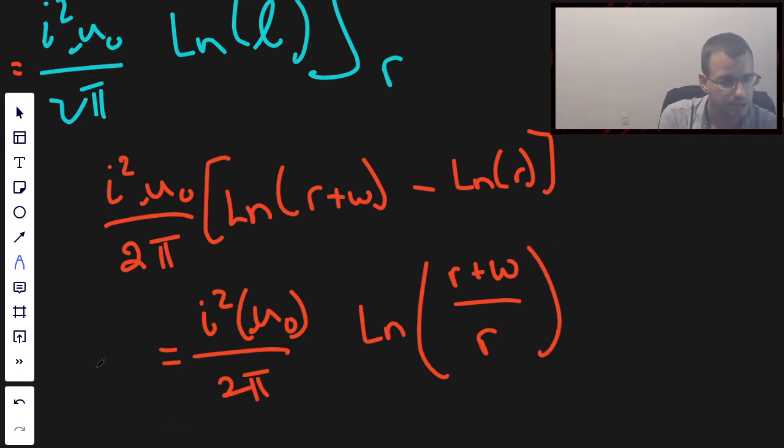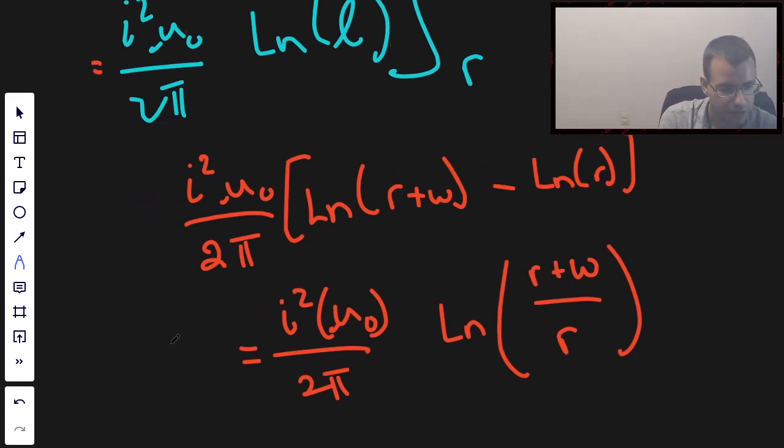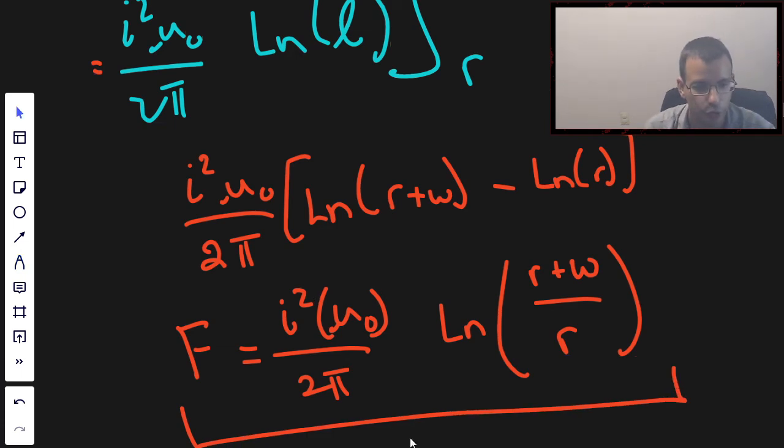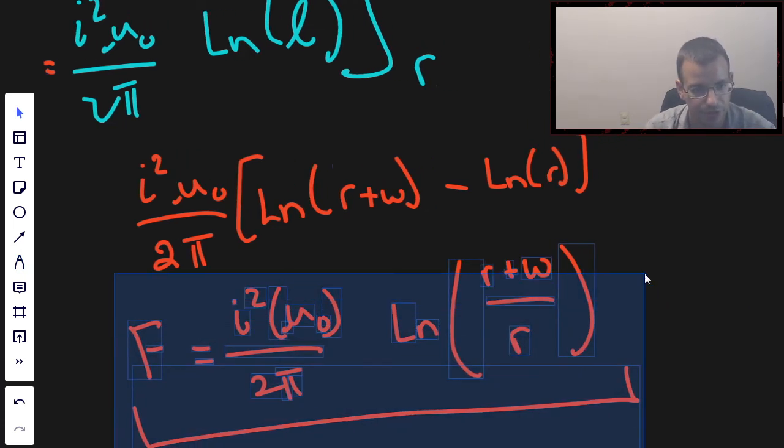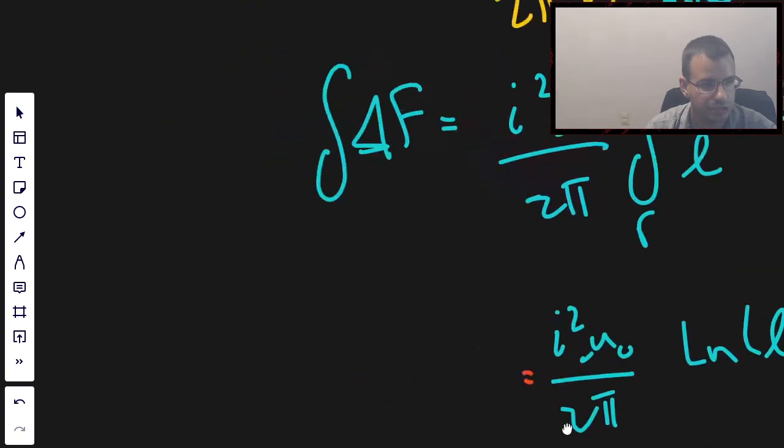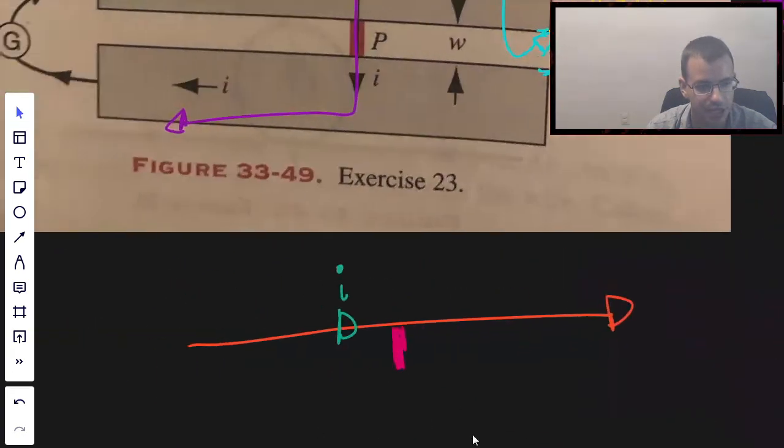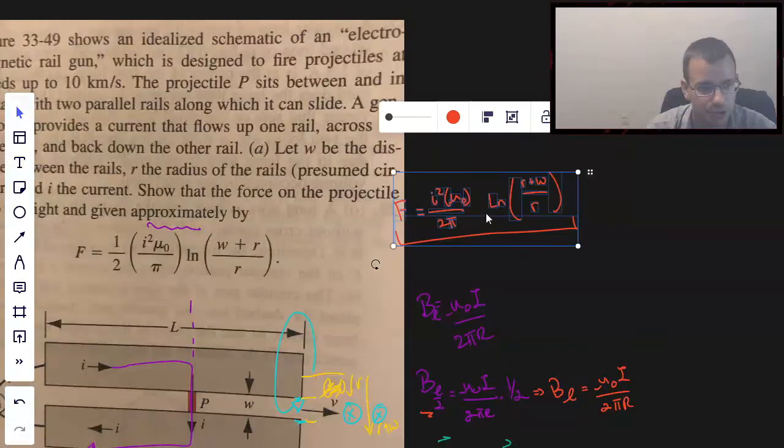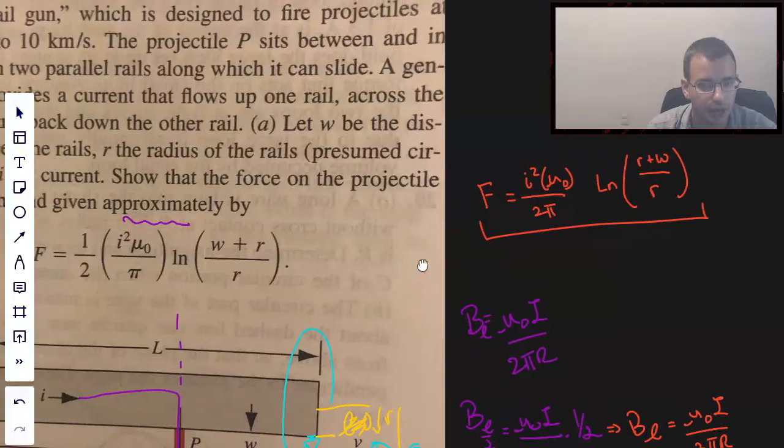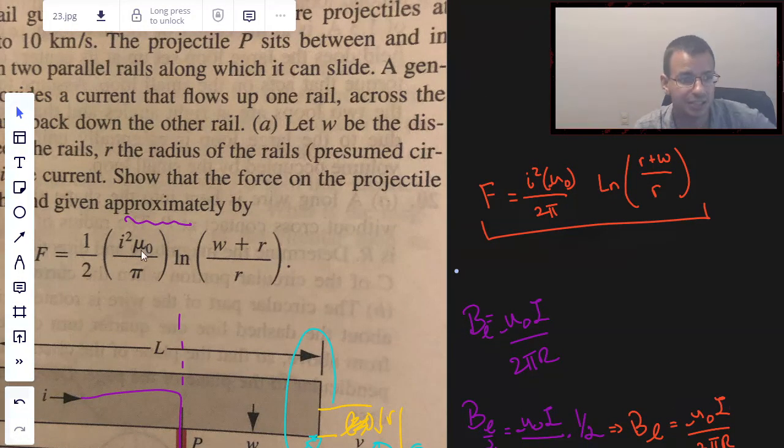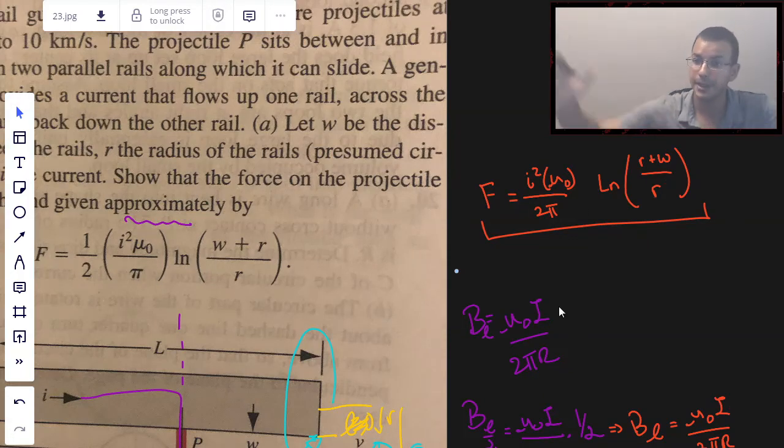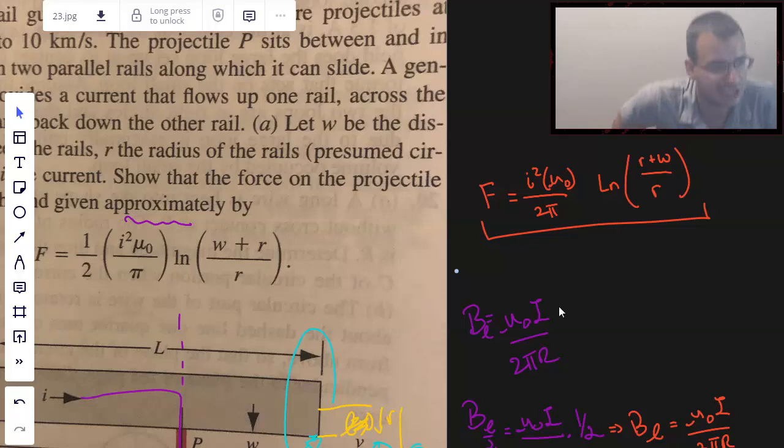I think that might be it. And this is going to be the total force acting on the wire, the rail, in the middle. Let's see if I can copy and paste all this, move it up here, see if it's actually correct or at least similar to what they had. I² mu_0 over 2π natural log of (W + R) over R. Yep. So equivalent, same idea.